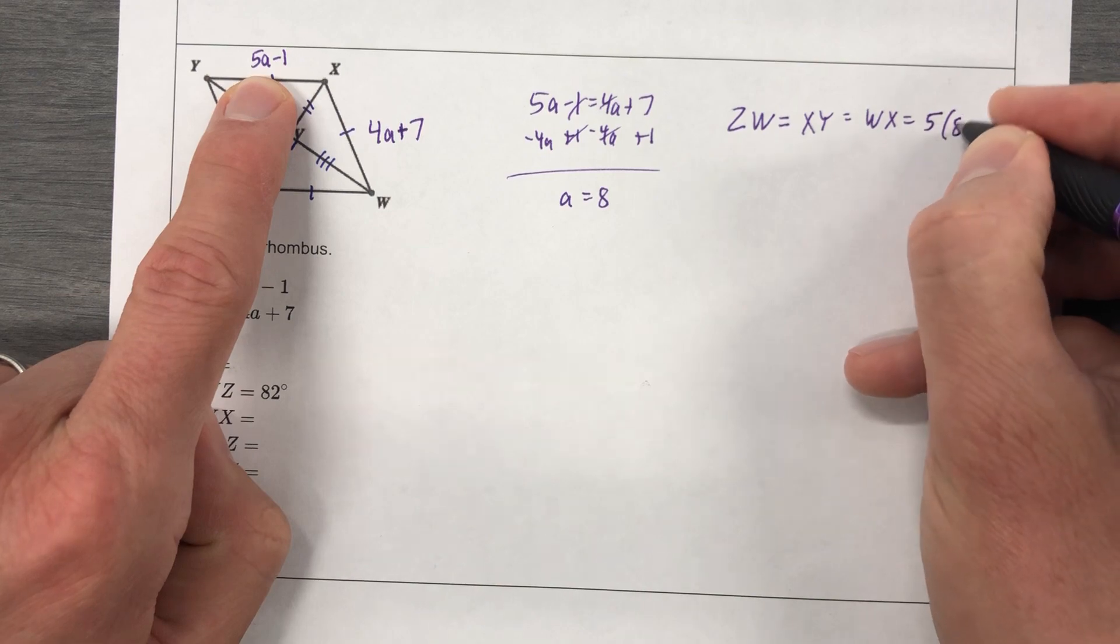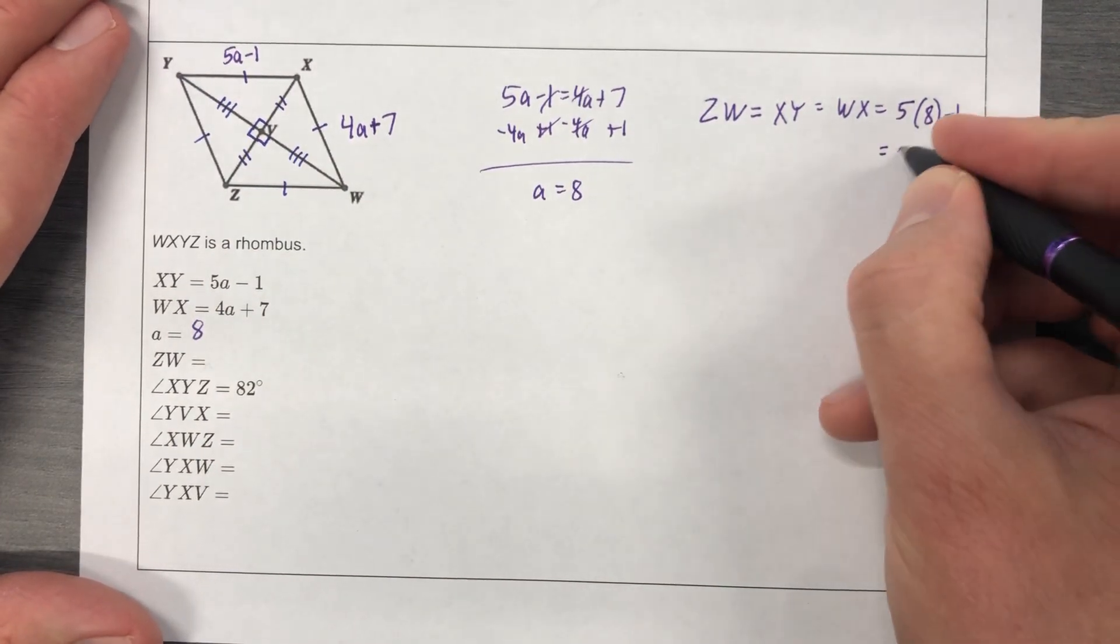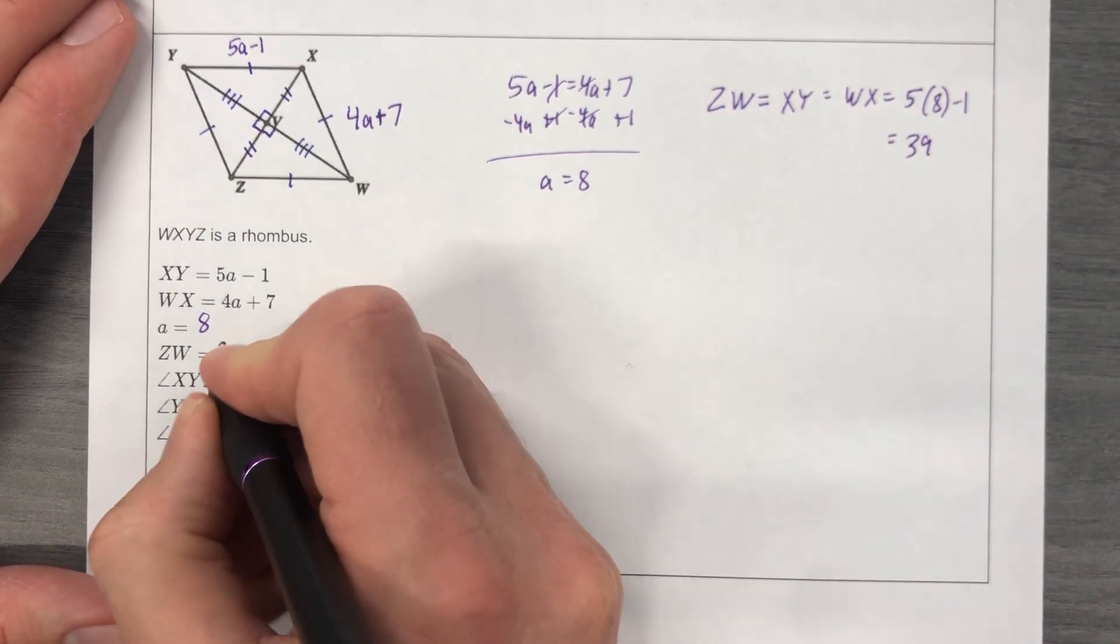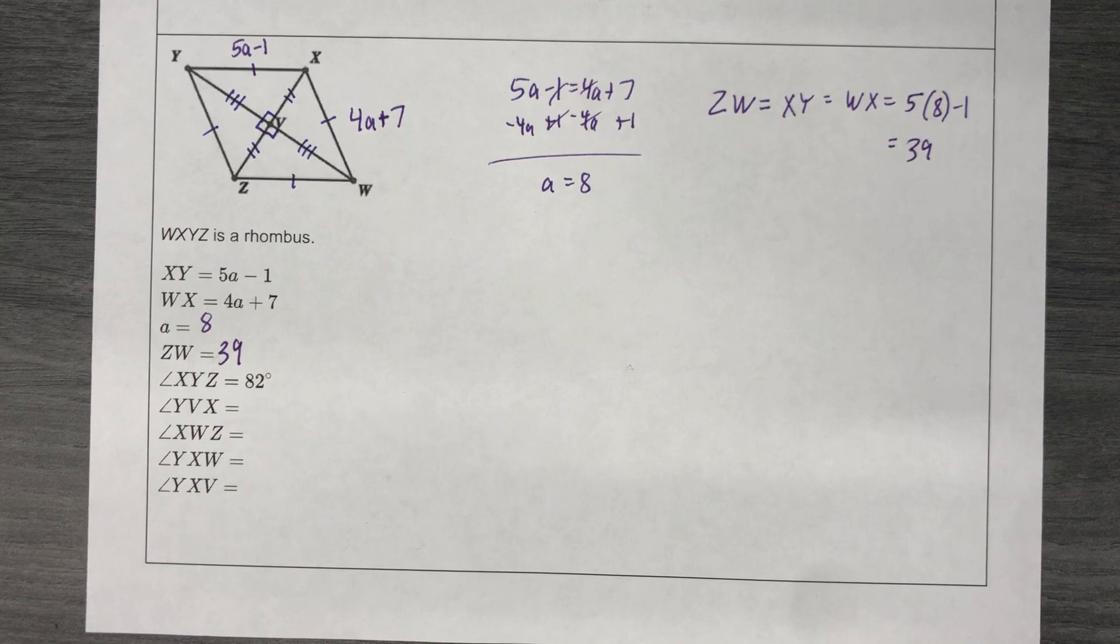5A minus 1, but A is 8. So that's going to give me 40 minus 1, so 39. All right. Good to know. Now let's switch colors again. Red okay with you? Of course.